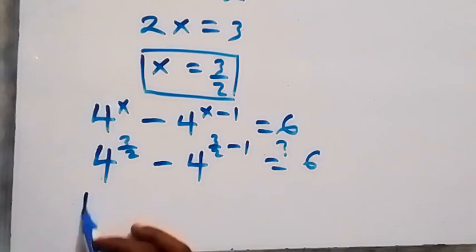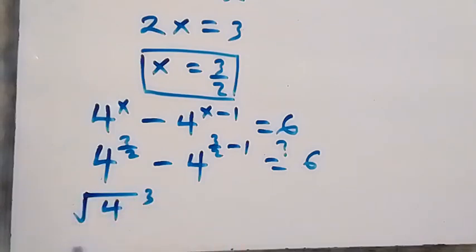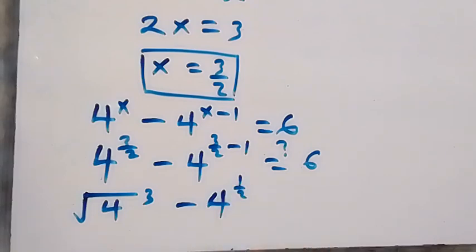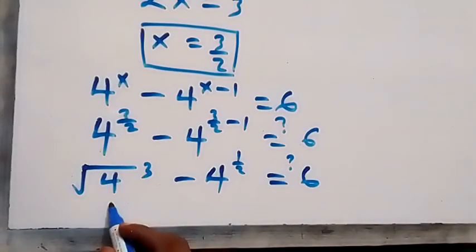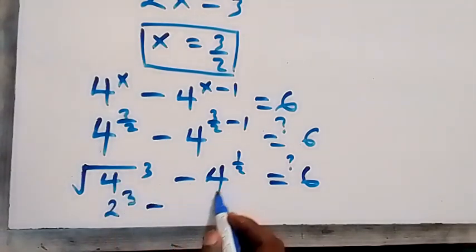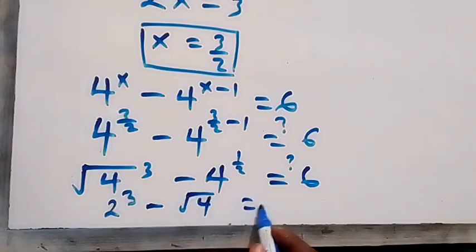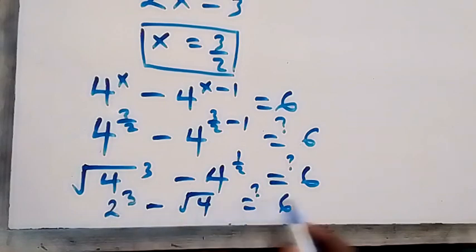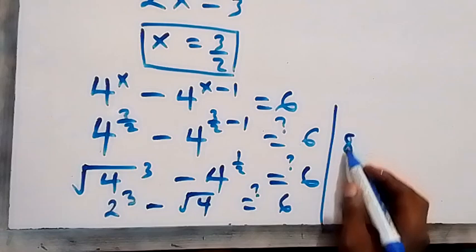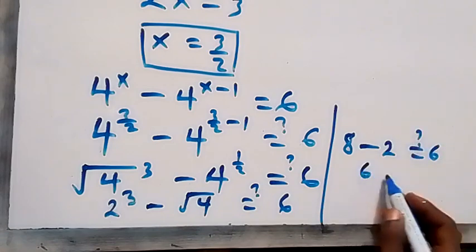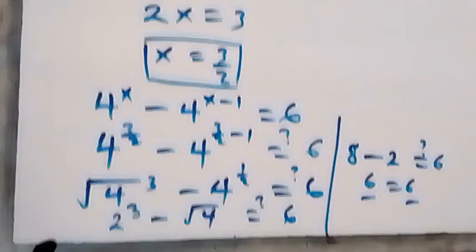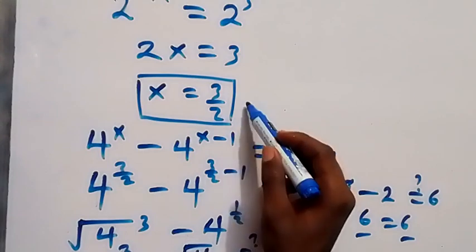From here, 4 raised to power 3 over 2 minus 1 equals 4 raised to power 1 over 2, and 4 raised to power 3 over 2 equals 2 raised to power 3, which is 8. Then minus the square root of 4, which is 2, equals 6. So we have 6 equals 6 — left-hand side equals right-hand side. Therefore we conclude that x equals 3 over 2.